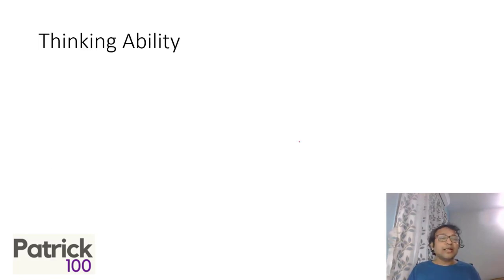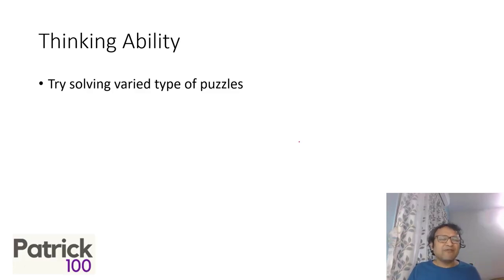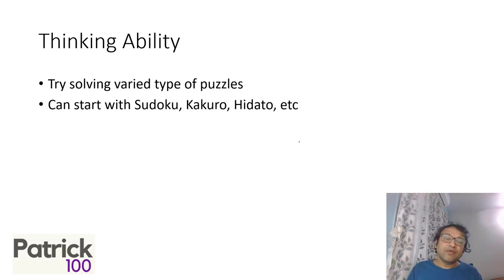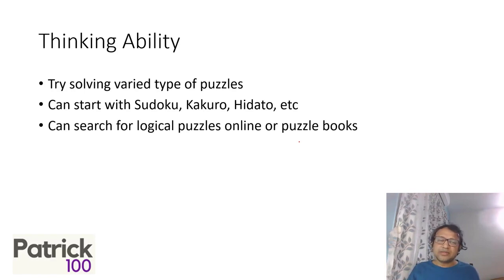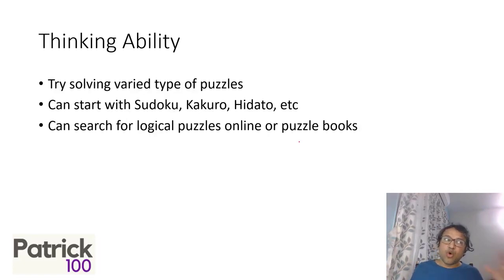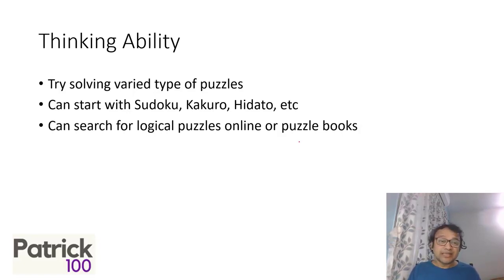In DLR, every time there is a new type of set, so improving your thinking ability helps. To improve thinking ability, try solving varied kinds of puzzles. Sudoku is very common — it helps you put down data properly and solve systematically, and some logic sums in the exam are directly related to sudoku. Also try Kakuro, Hitori, and different logical puzzles available online or in puzzle books. In fact, one CAT question came directly from a puzzle book. Solving a variety of puzzles develops your ability to think through unfamiliar problems.